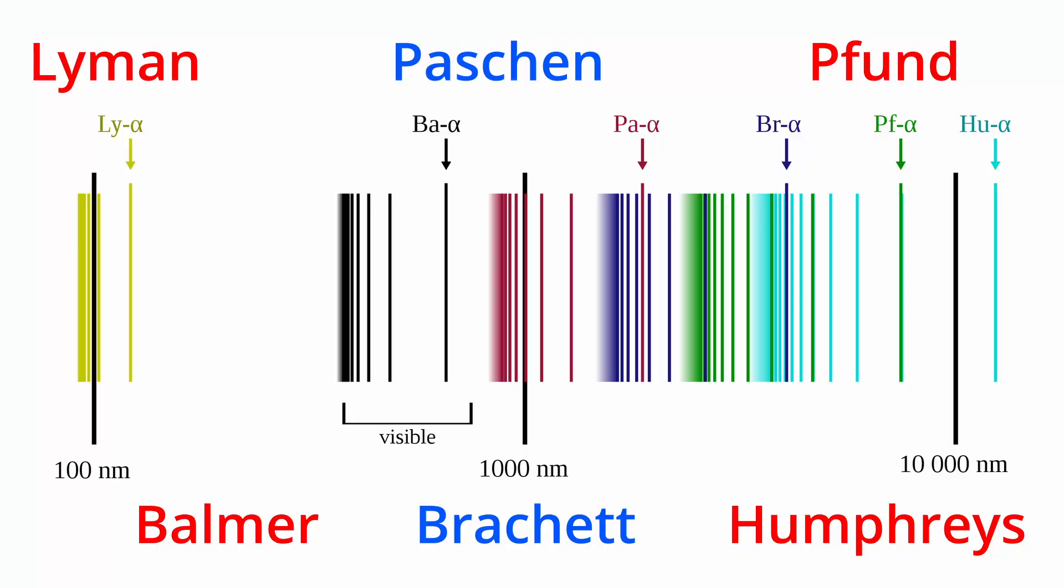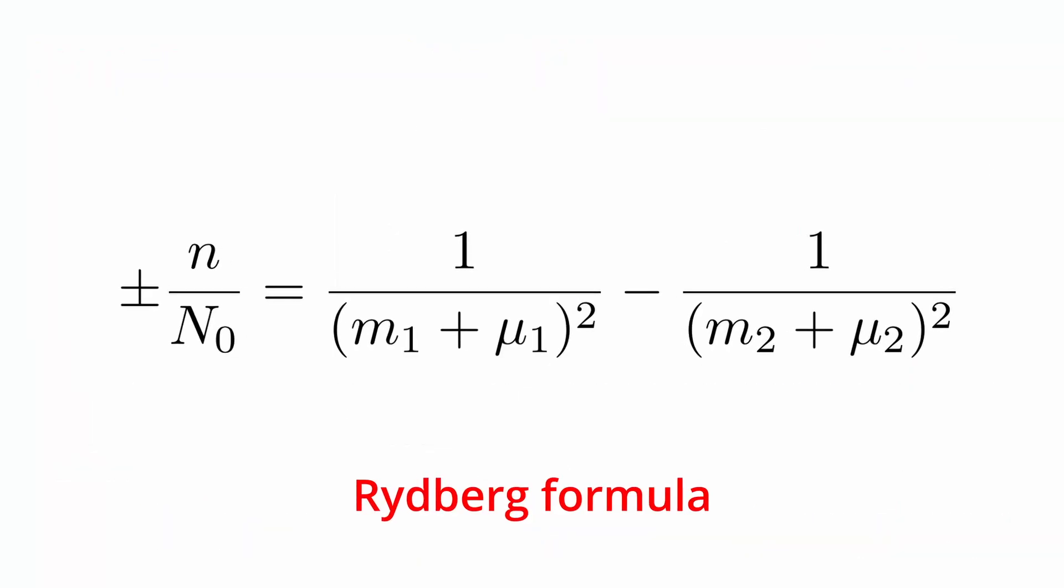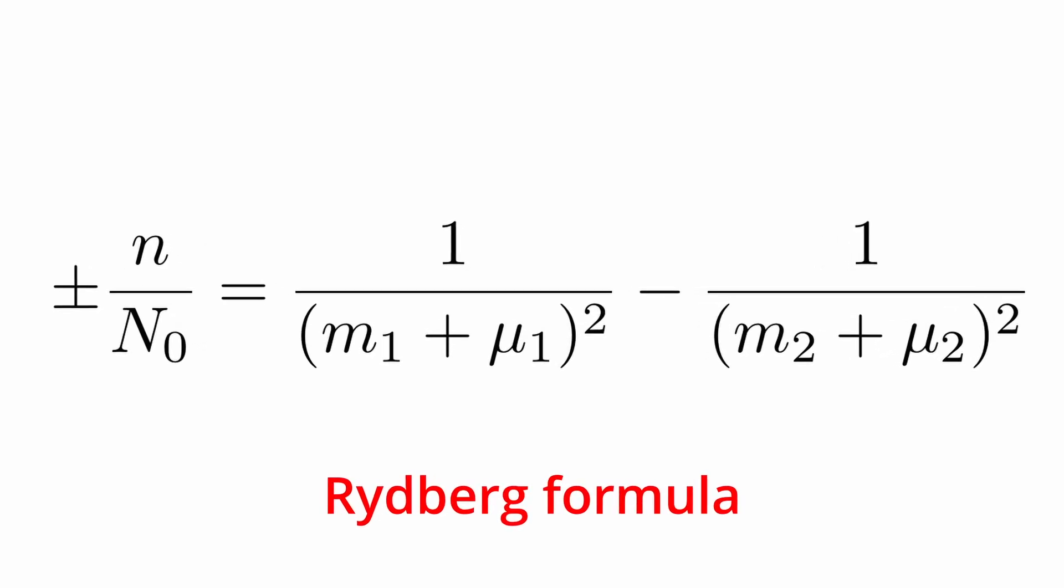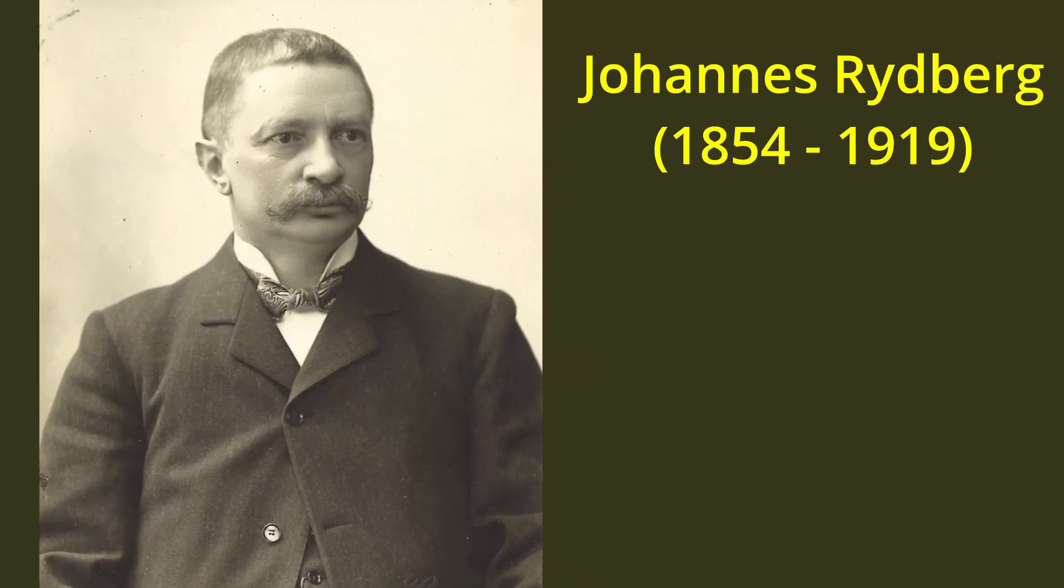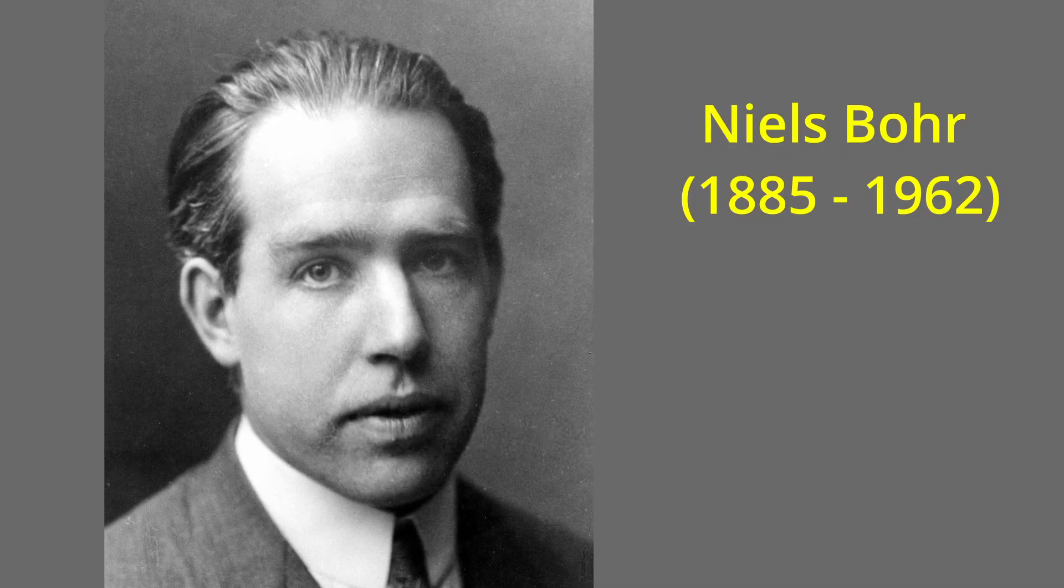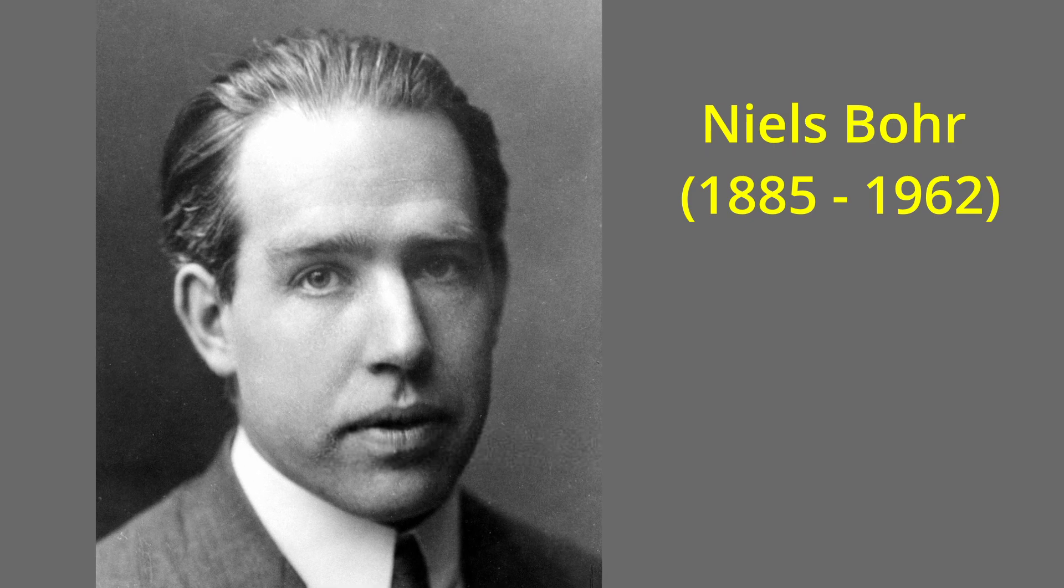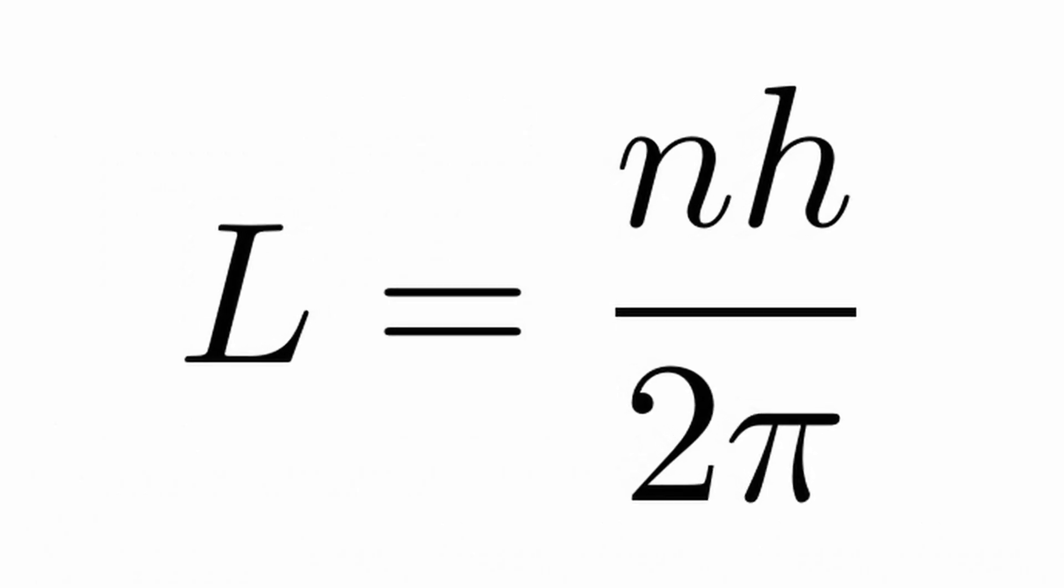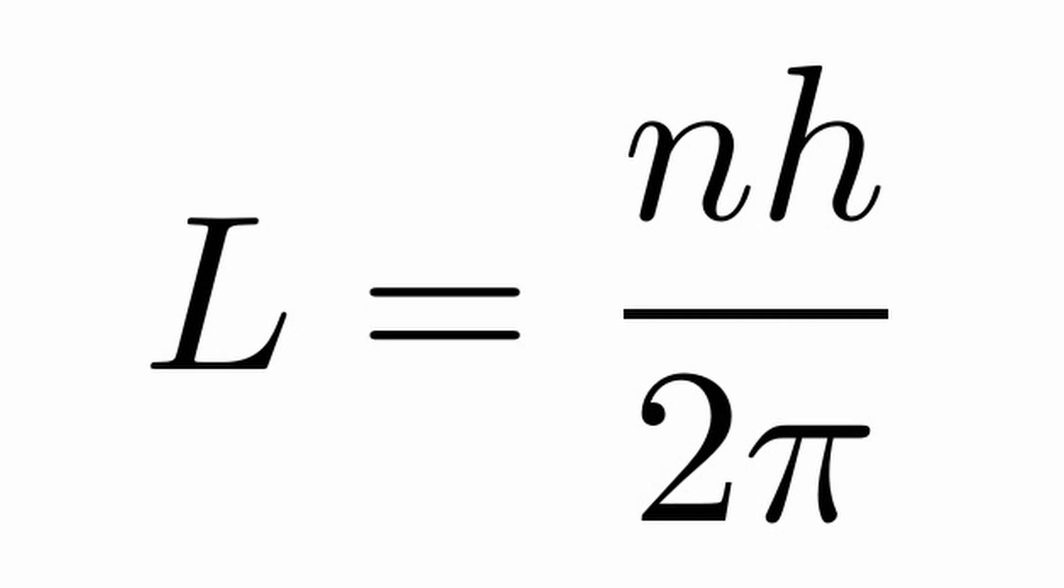...what really shook the physics world was the use of Planck's constant to explain the emission spectrum of hydrogen. The emission spectrum of hydrogen was described mathematically by the Swedish physicist Johan Rydberg in 1890. The Danish physicist Niels Bohr postulated that the angular momentum of an electron could only be an integer multiple of Planck's constant divided by two pi. So now, not only was Planck's constant being used to quantize the energy of light, it was also being used to quantize the angular momentum of an electron.